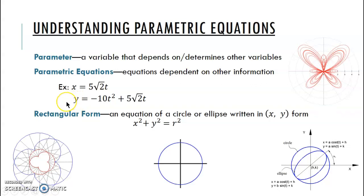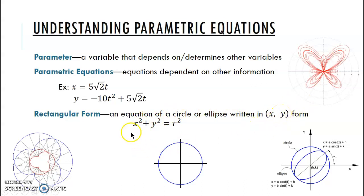What we've normally used is something called rectangular form — that's our basic x and y. Now we're going to be dealing with circles, so it's important to know the equation of a circle in terms of x and y coordinates. The equation of a circle is x² + y² = r², where r is our radius. That is the basic equation of a circle on an x-y grid.